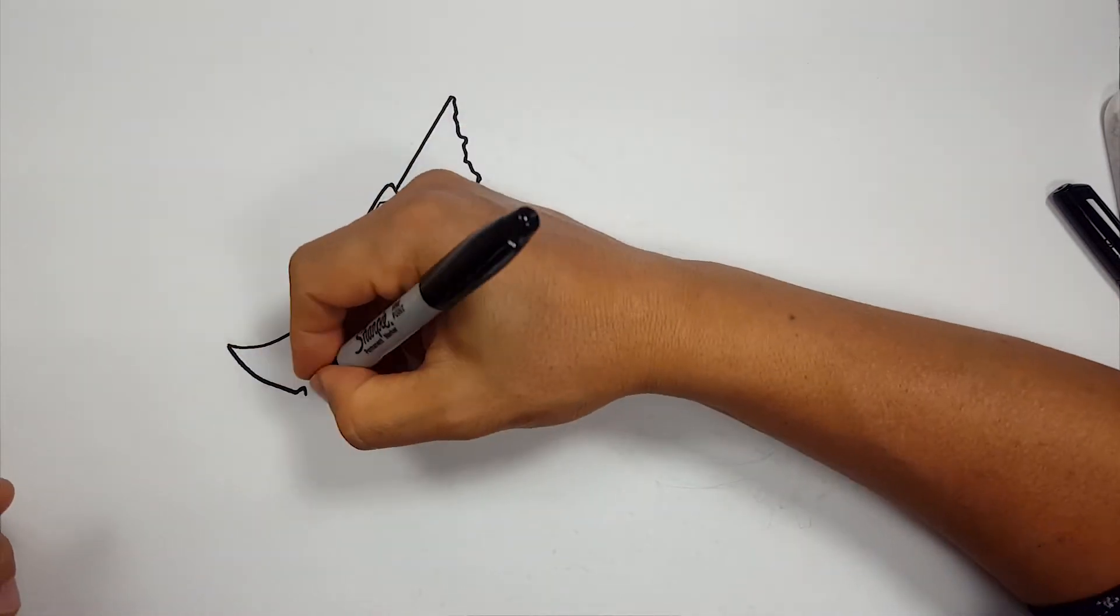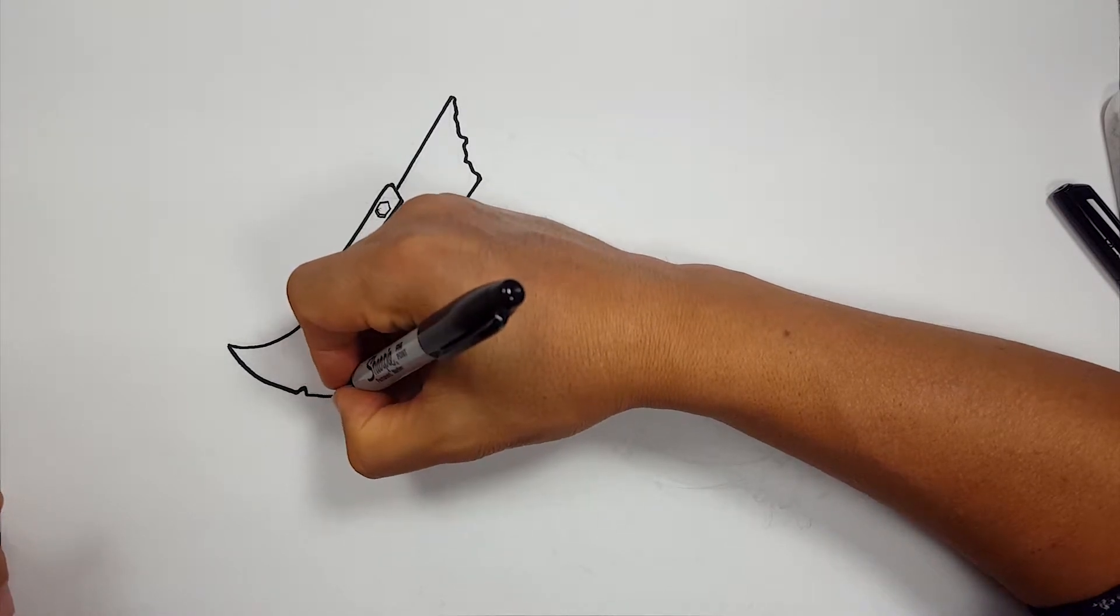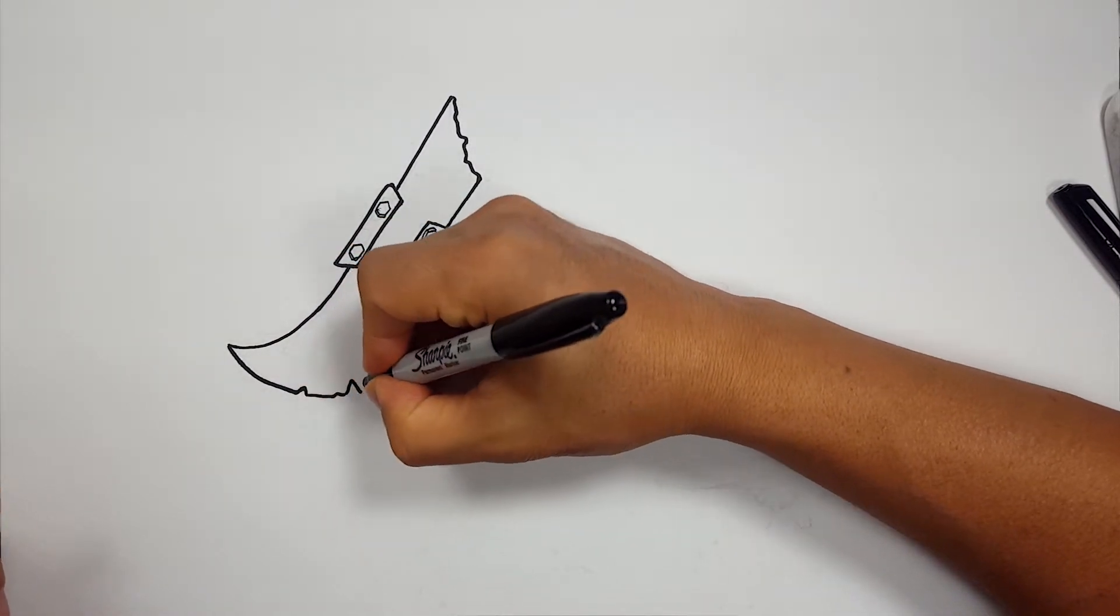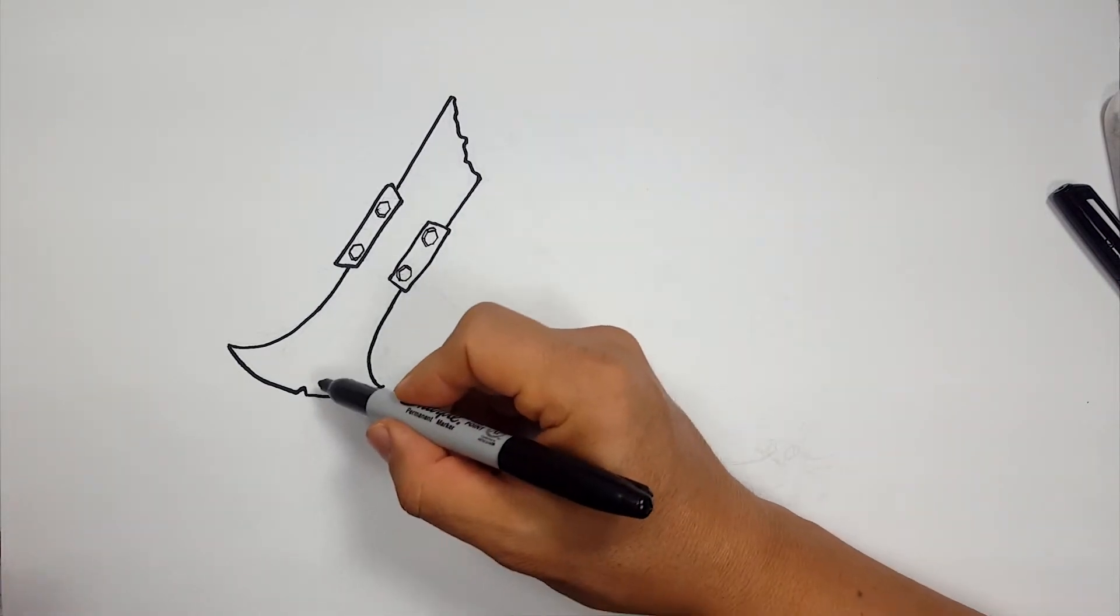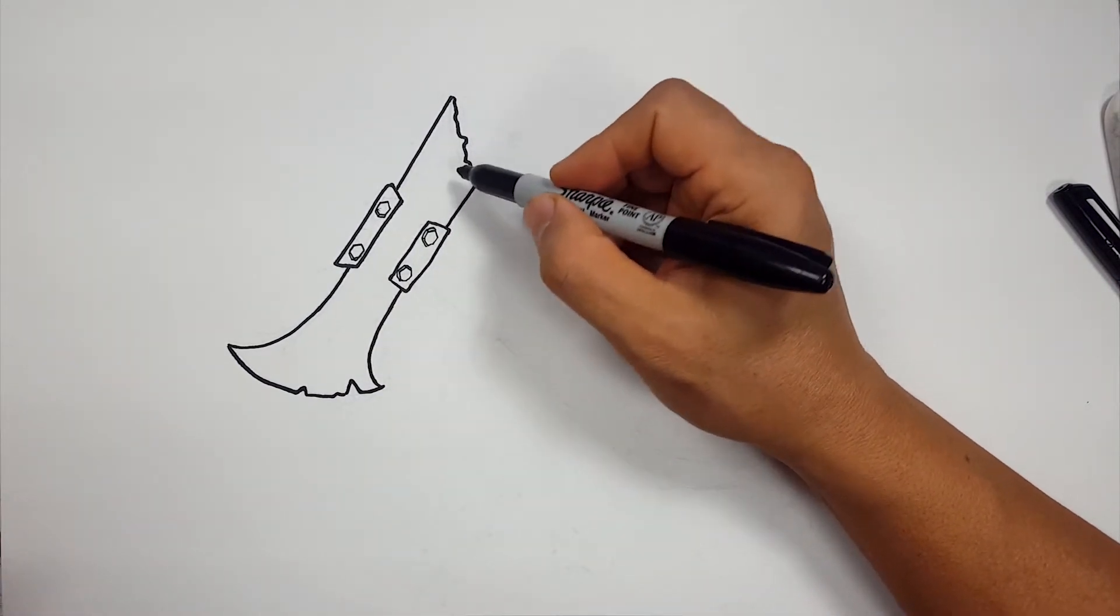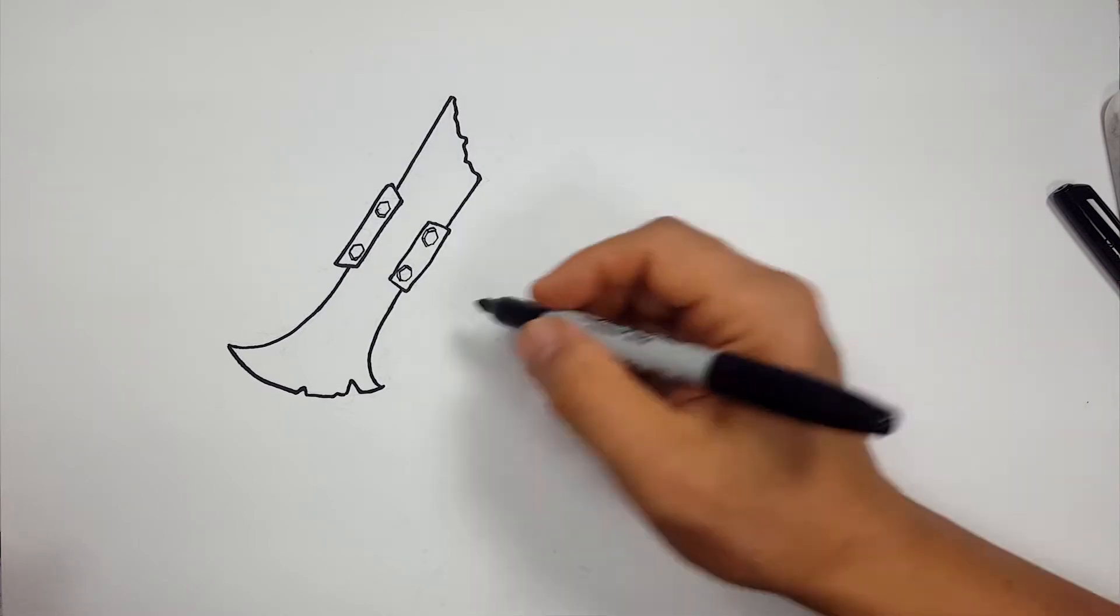And then I'm going to draw the edge here. Draw a couple of little chips. Some potato chips. Just kidding. Just chips in the axe. Something like that. And there is a middle edge right there, but I think I want to do that with color. I'm not going to worry about that. So that's all for there.